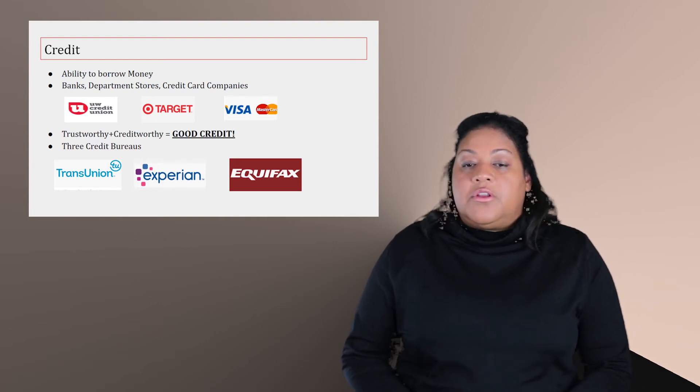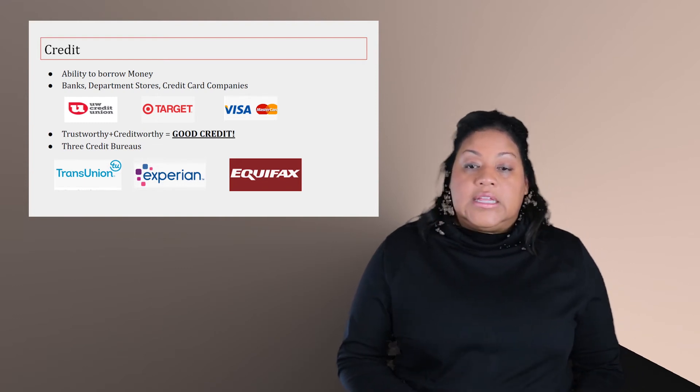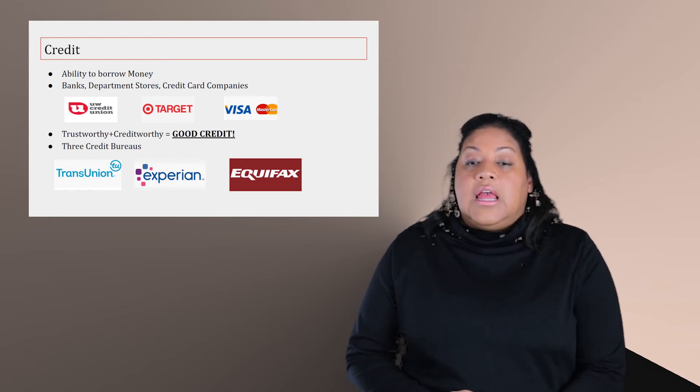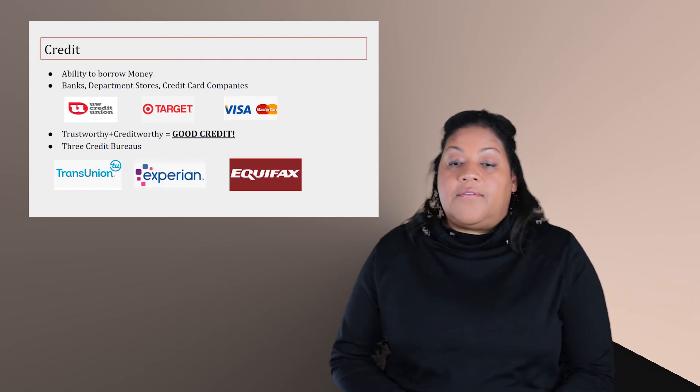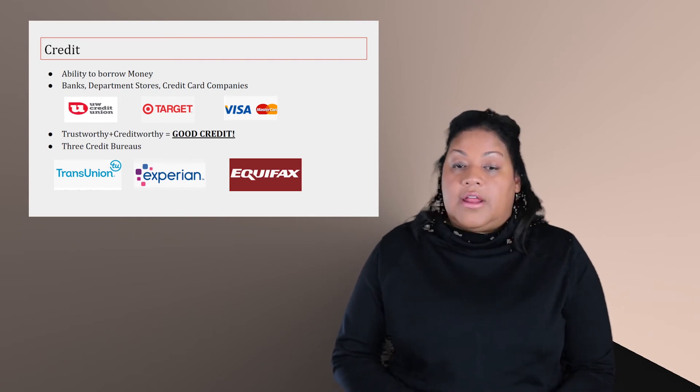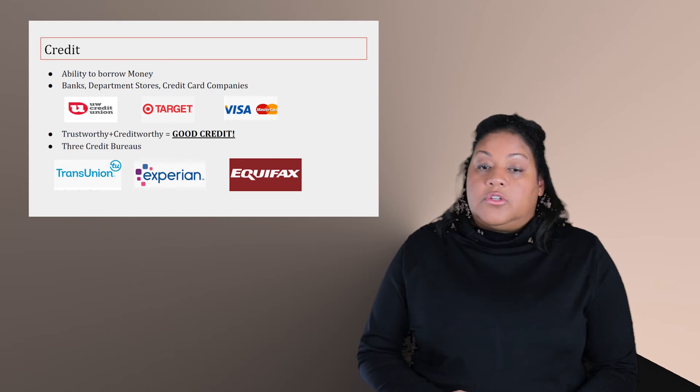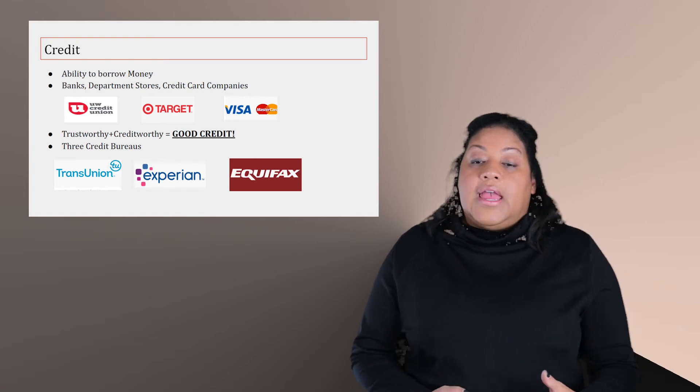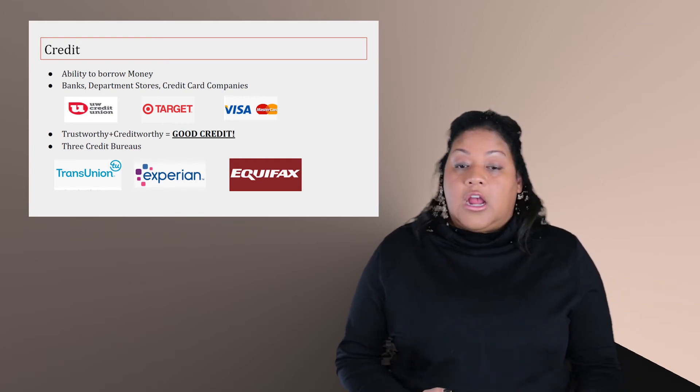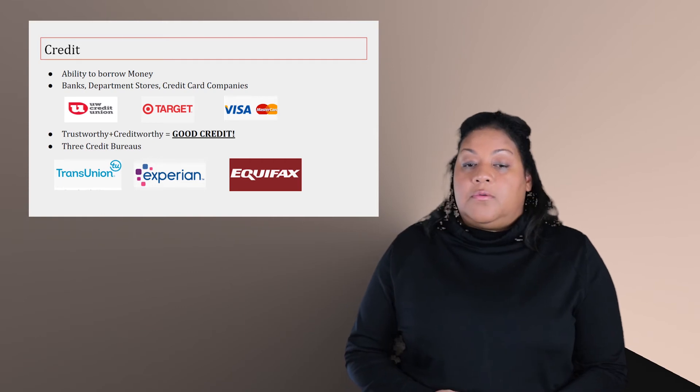Second is the service credit. So when you think about your cable, your utilities, these are companies that provide a service to you each month with the understanding that you will pay for them after the fact. The third is the installment credit. An installment is like a loan. So when you're thinking about buying for your student loans or buying a car, you have a set amount that you would pay each month.